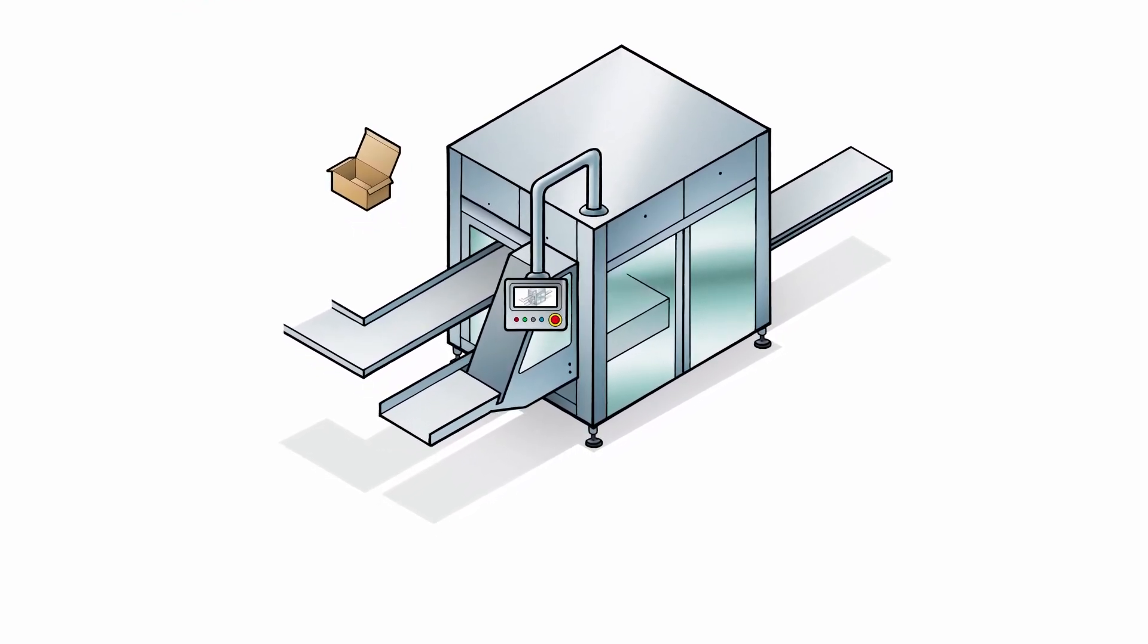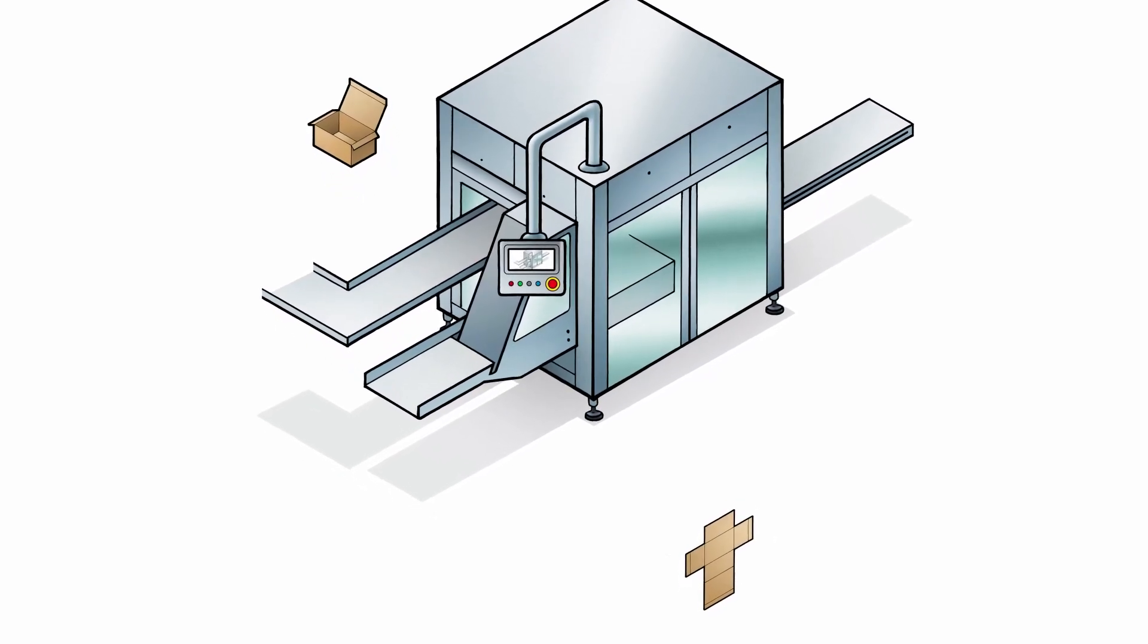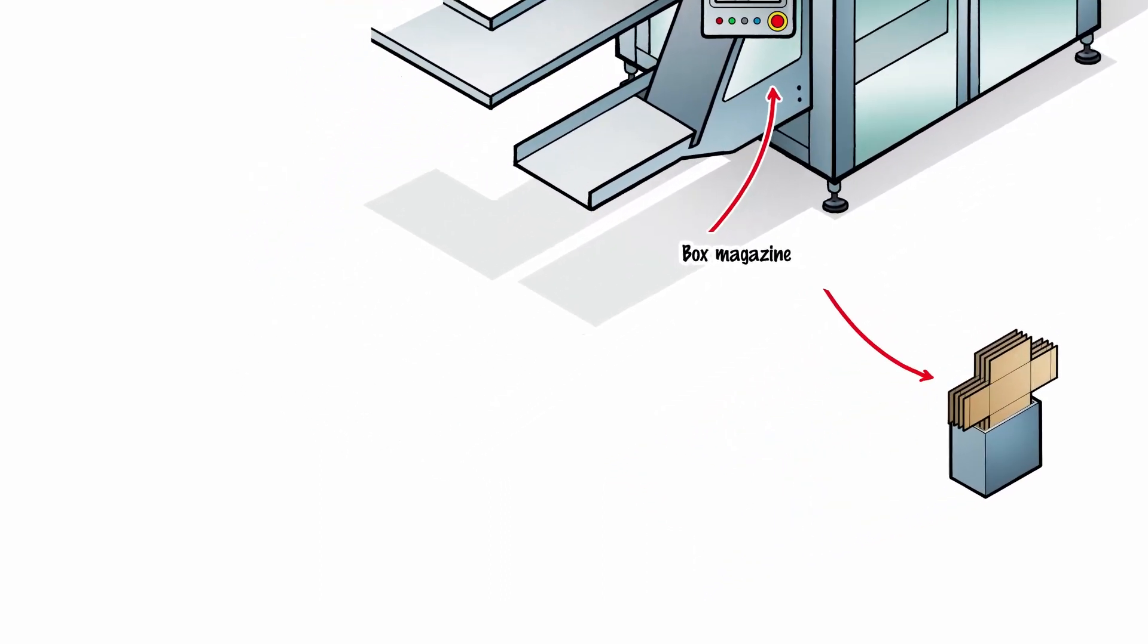The multi-packer first needs a box to put the products into. The blanks are ready and waiting in the magazine. There are several ways of preparing the box.